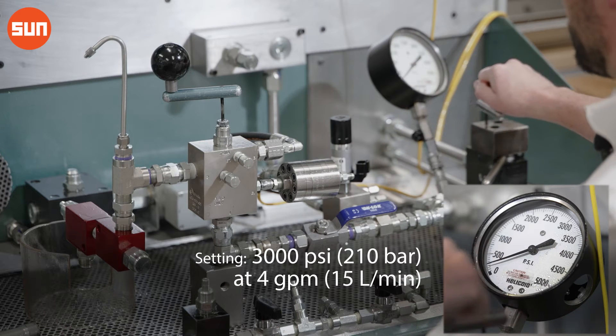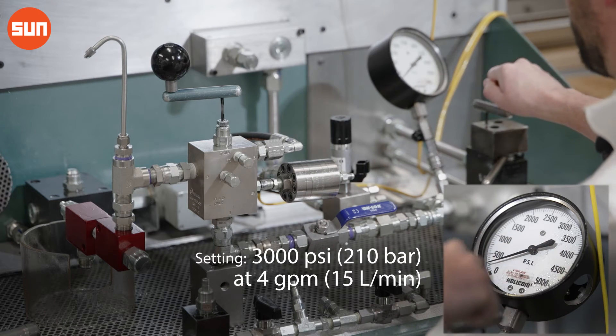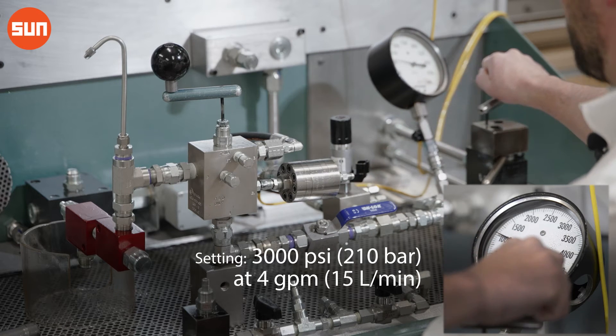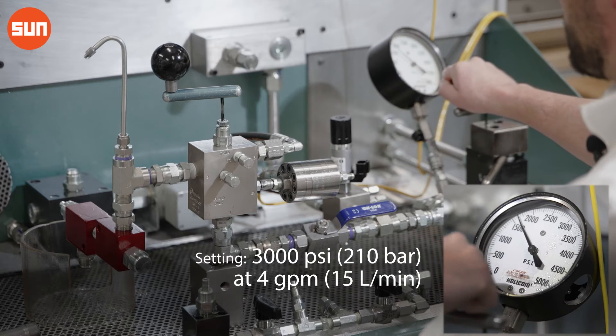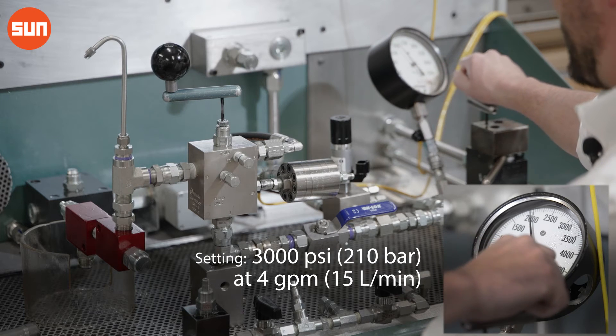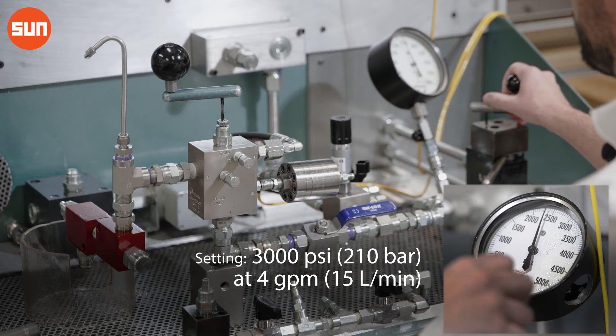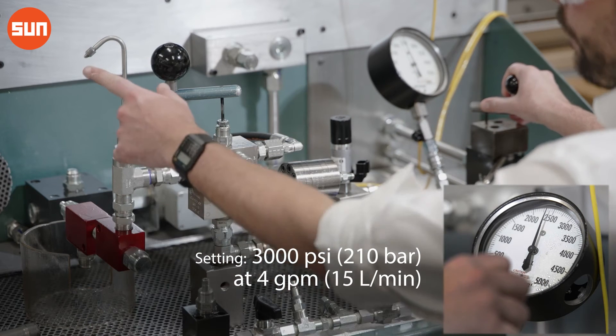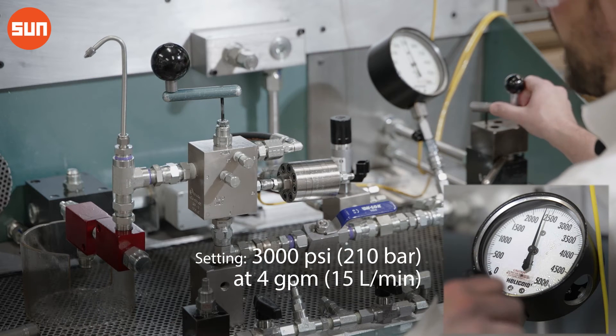So I am going to slowly increase test stand pressure up to our setting. The slower you go, the more accurate you are going to be. And again, I'm watching for drops out of the P-tube.